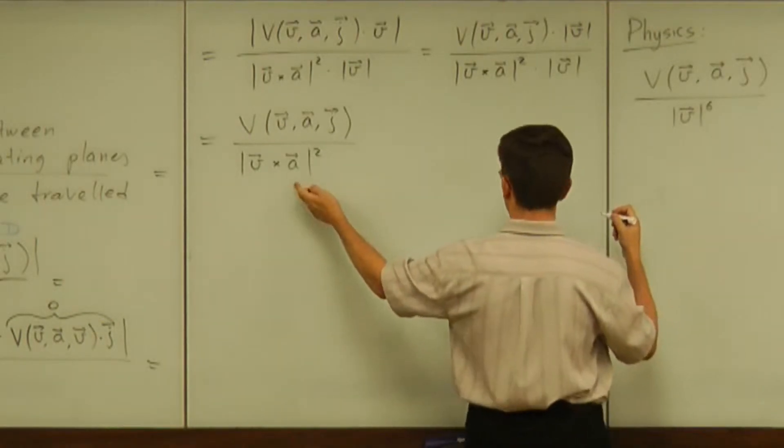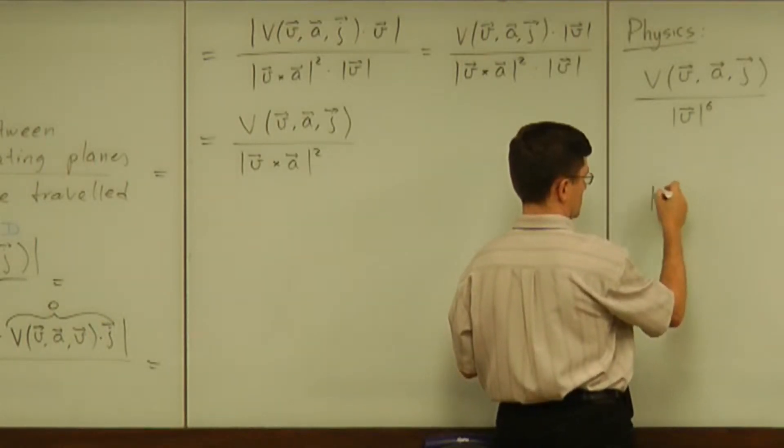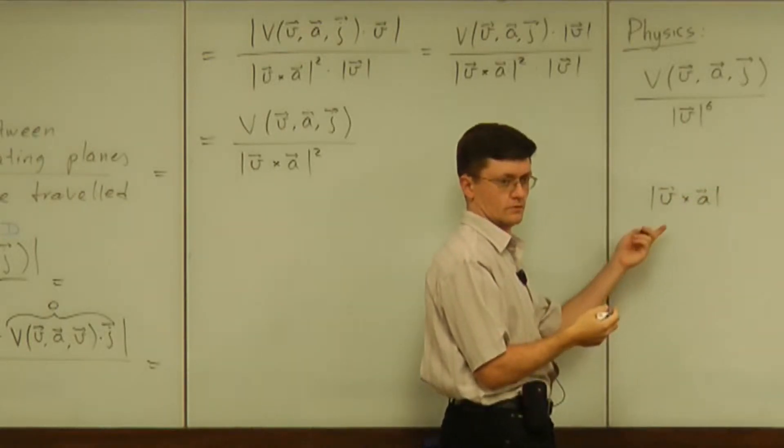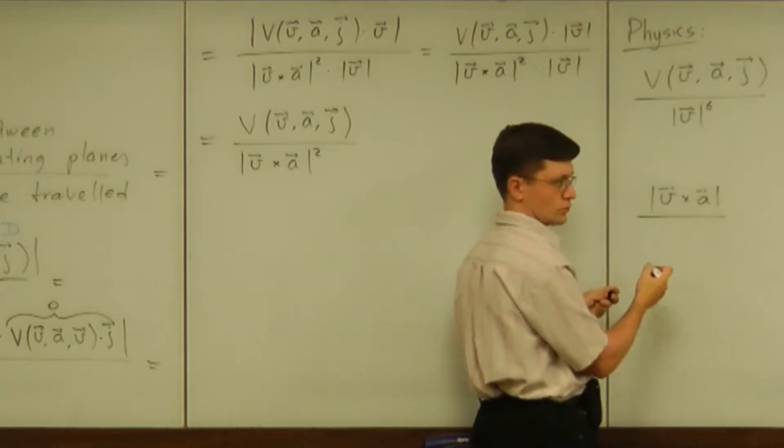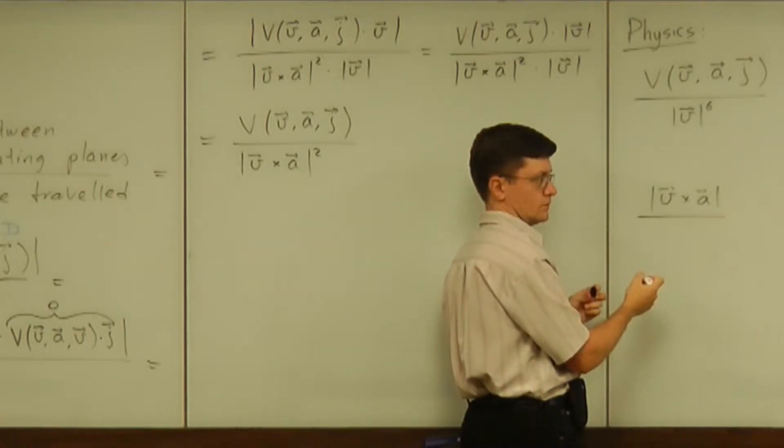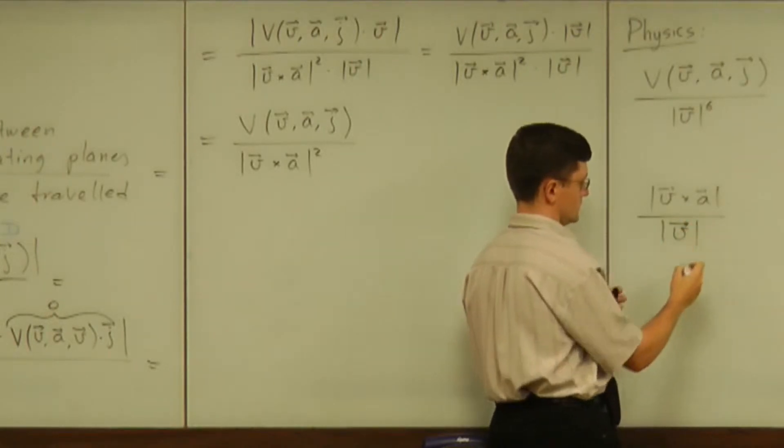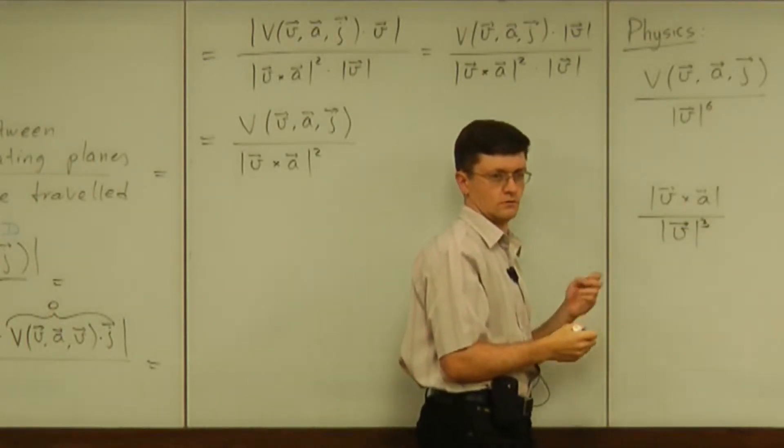Remember what this V cross A is responsible for. It was a part of the formula for the curvature. We needed to divide that by the speed to the power of three to get the curvature.